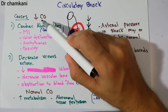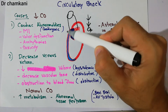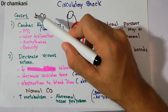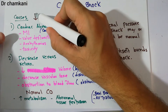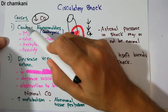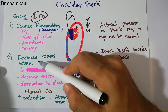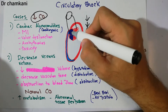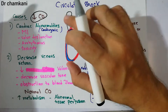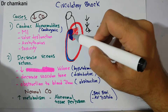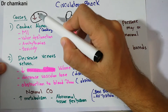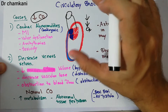Circulatory shock may be either due to decreased cardiac output or the cardiac output may be normal. Decreased cardiac output shock may be due to problems in the heart — cardiac abnormalities — or it may be due to decreased venous return. Either the heart is unable to pump the blood, or the heart can pump but the blood is not properly returning back to the heart.